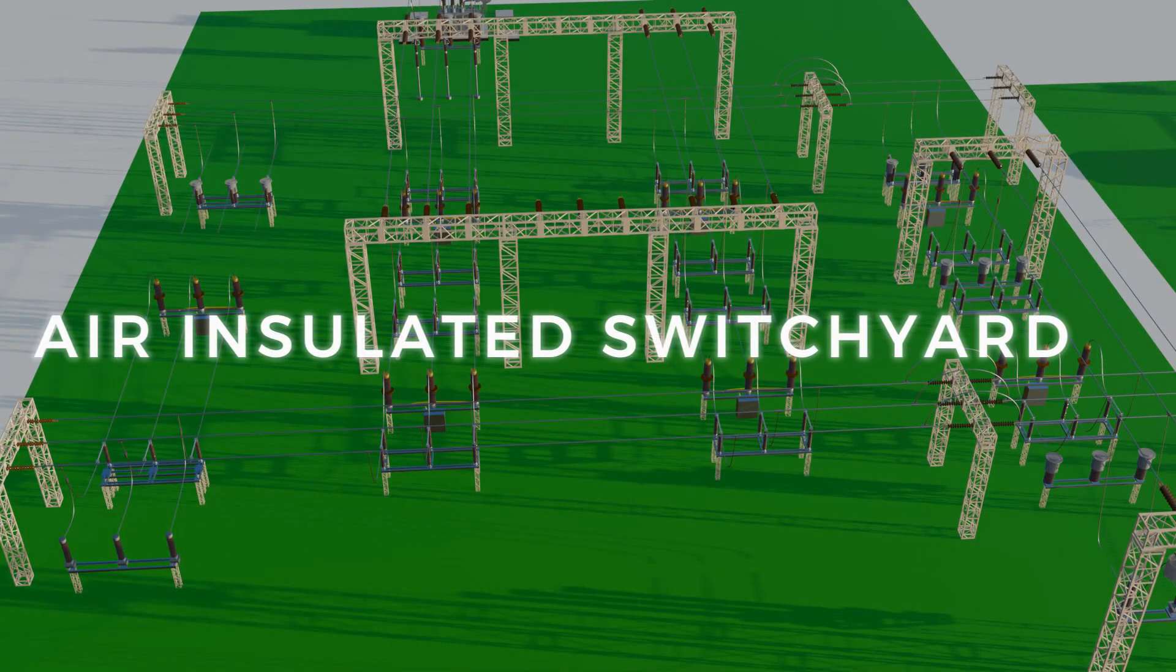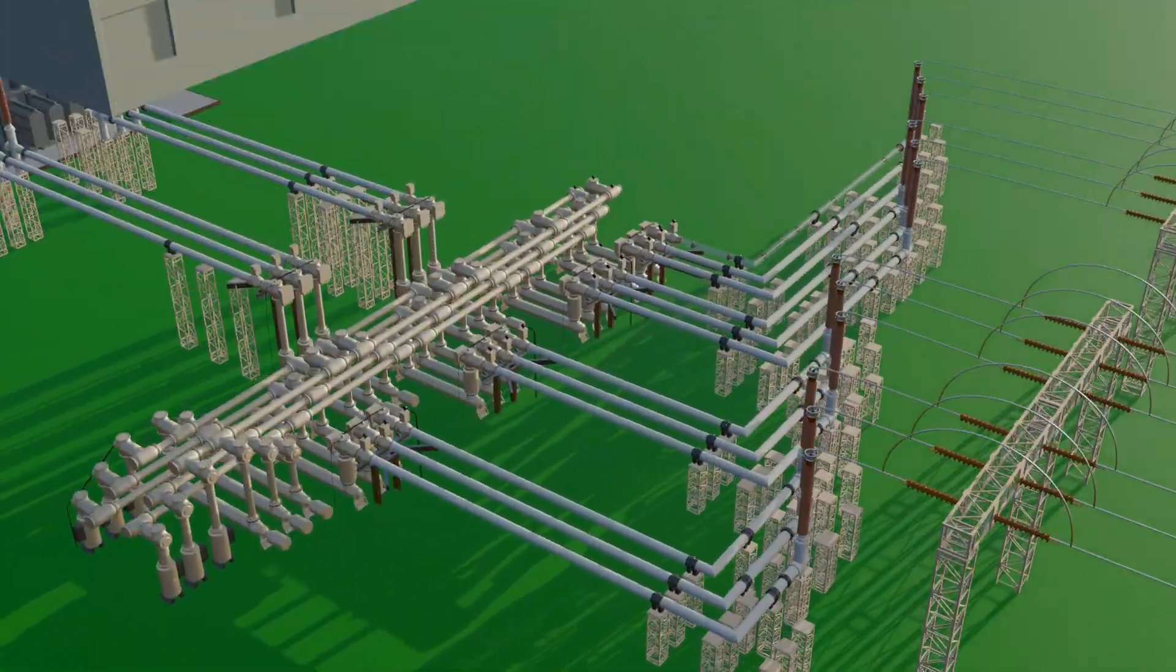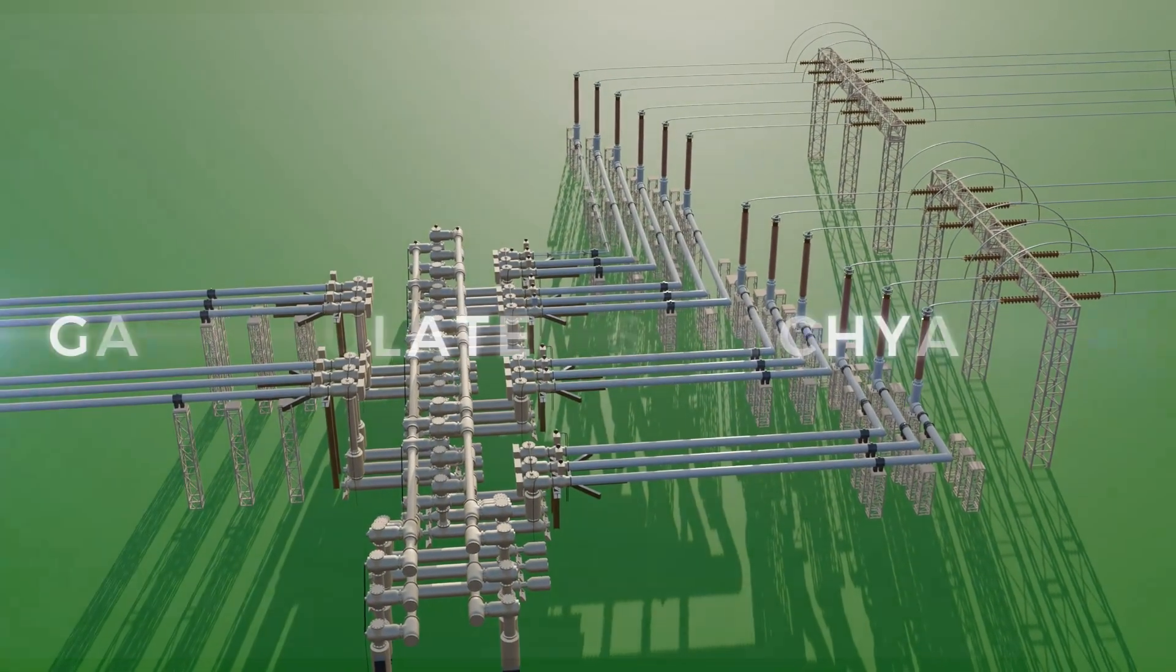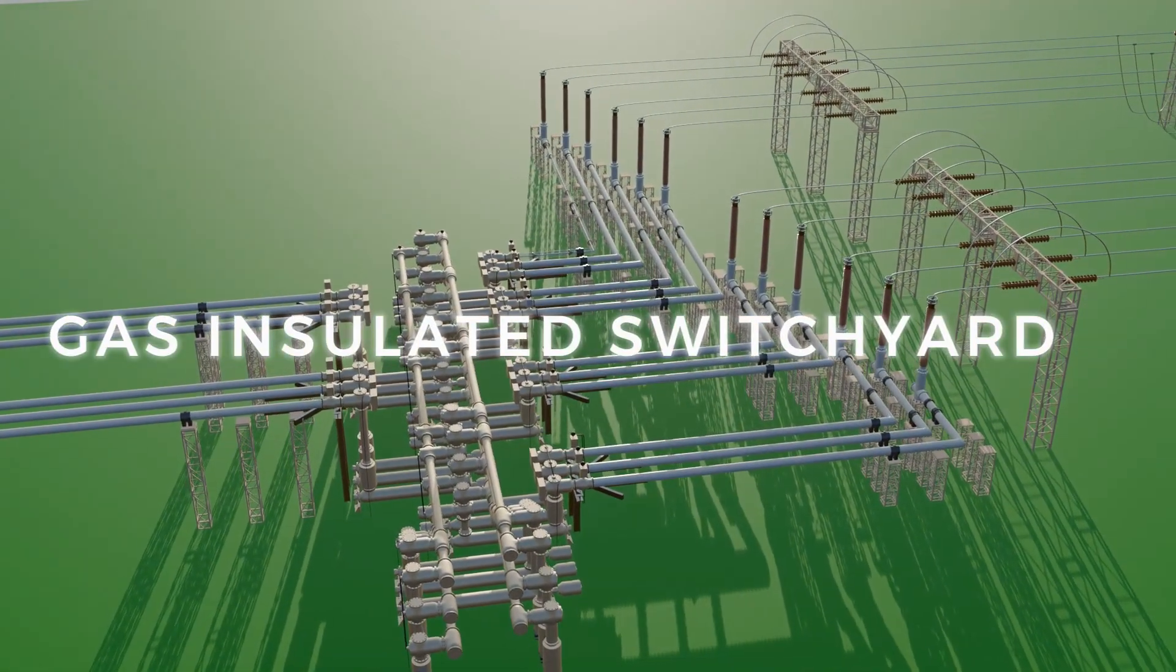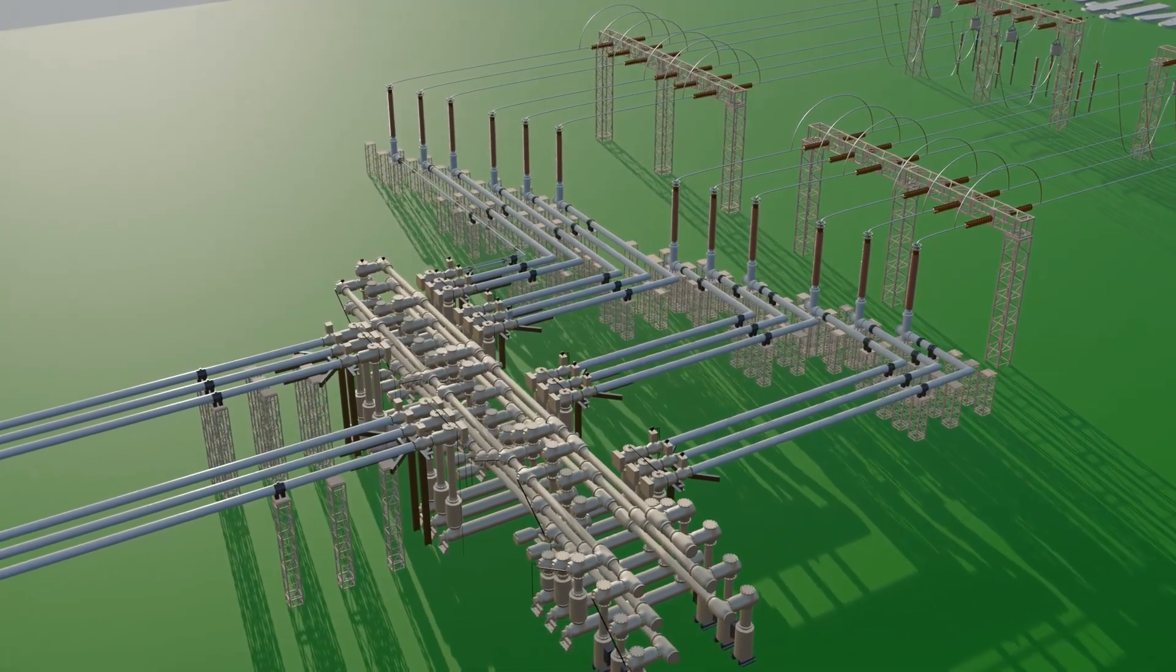Now imagine the same 400 kV switchyard being built inside a small building. The only difference is instead of using air as insulation, we use gas insulation. This type of switchyard is much safer and requires far less space, so it can even be installed on the ground floor of a building.